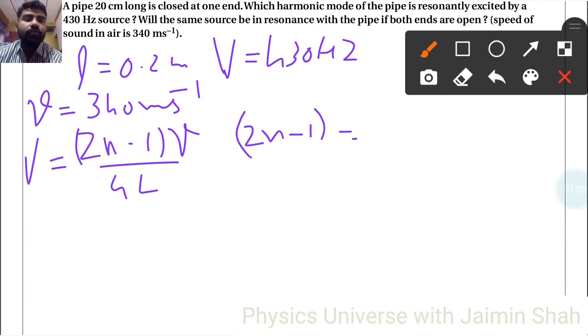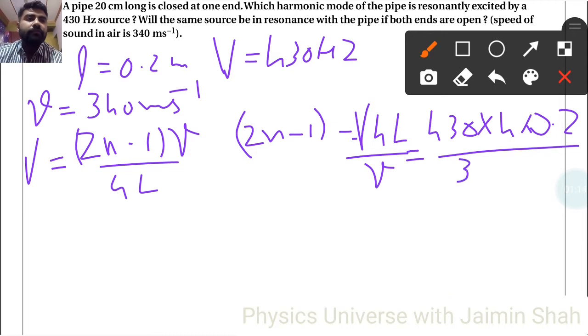So nu is 430, right? So 430 into 4 into L is 0.2 upon V, that is 340. So 430 into 4 into 0.2 upon 340.